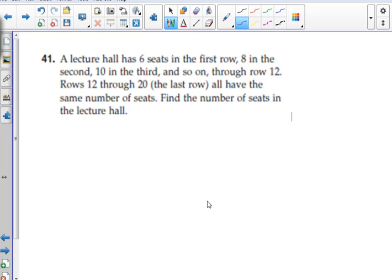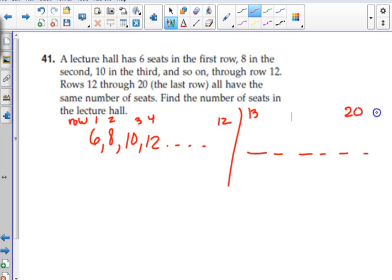This is an auditorium seats thing again, except it's got a little twist. It says a lecture hall has 6 seats in the first row, 8 in the second row, 10, 12, da-da-da-da-da, out through 12 rows. This is row 1, row 2, row 3, row 4, out to row 12. Then rows 13 through 20 all have the same number of seats that you had in... I don't know why I have that at the end there, sorry. All the way out to row 20.